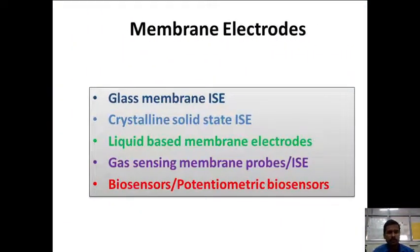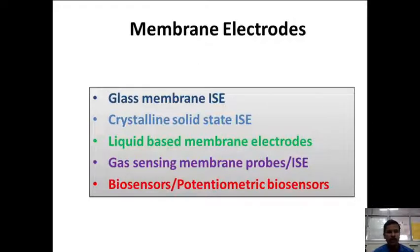Membrane electrodes are indicator electrodes working on the principle that when a membrane is placed into the analyte solution, the membrane has the analyte solution of different concentrations at opposite sides. When the concentration differs at opposite sides, there is development of a potential difference called the membrane potential. This membrane potential can be related to the EMF of the cell and is directly proportional to the concentration of the analyte.